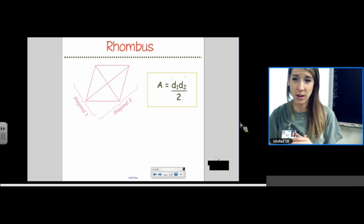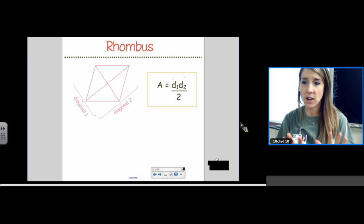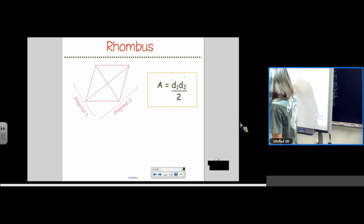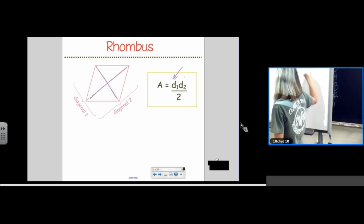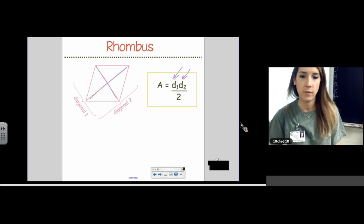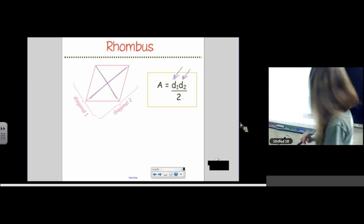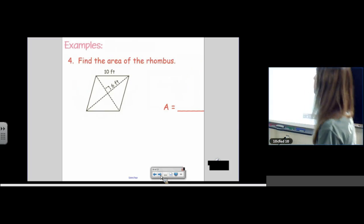It's kind of like base times height divided by 2. But, instead, it's diagonal times diagonal divided by 2. The diagonals will not be congruent if it's not a square. If it's just a rhombus and not a square, the diagonals will be different lengths. So, these numbers will be unique if it's not a square. Okay, let's try one of these.